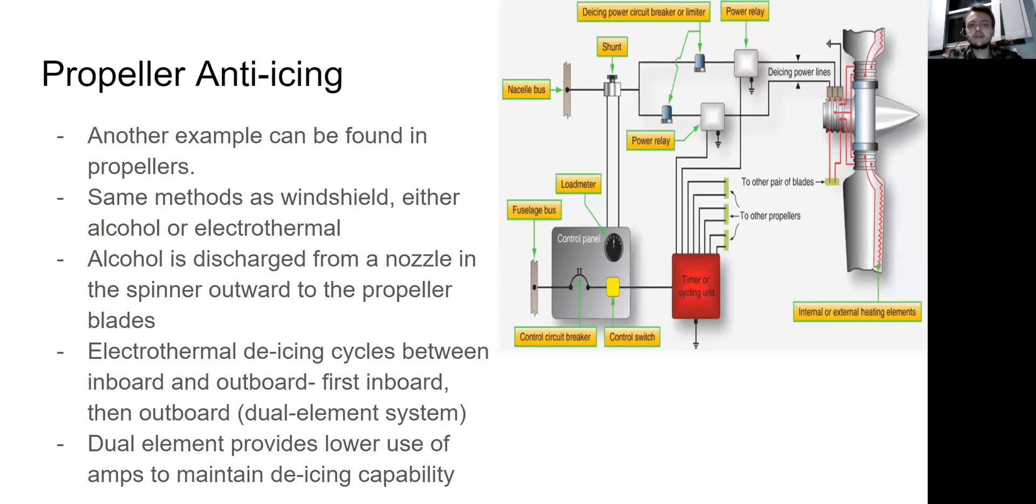Propeller anti-icing, it's mostly the same ideology as the windshield anti-icing method. It can be either alcohol or electrothermal. In the alcohol method, the alcohol is discharged from a nozzle in the spinner. This moves outward to the propeller blades. So as you can see on this diagram, from the spinner outward to the propeller blades, it'll go on the inboard section of the blade first and then move outward.